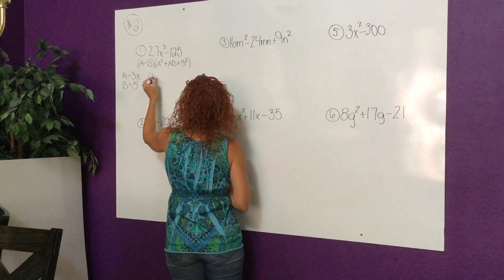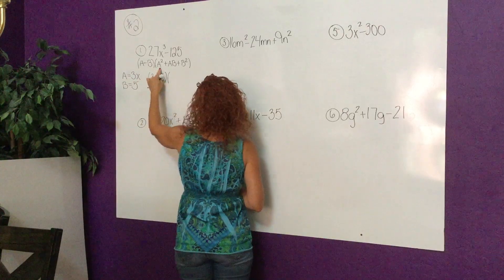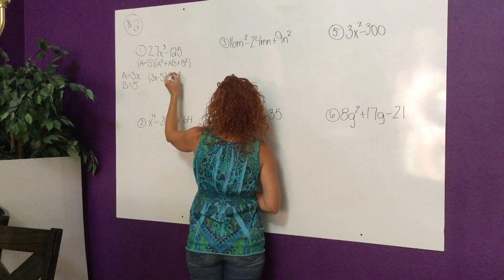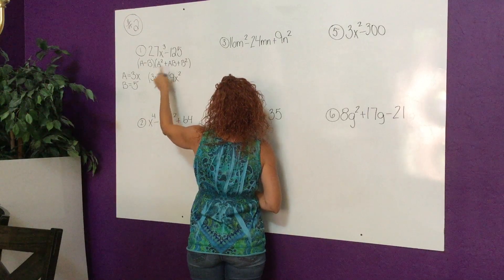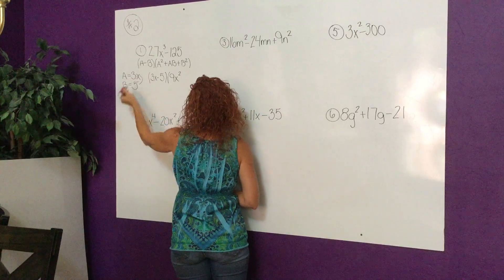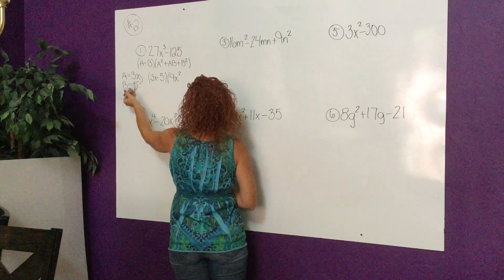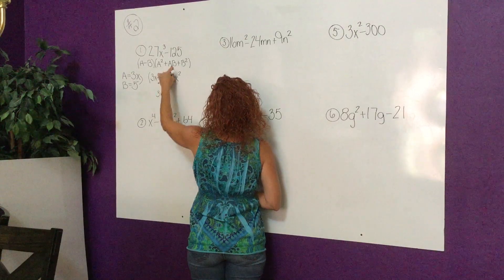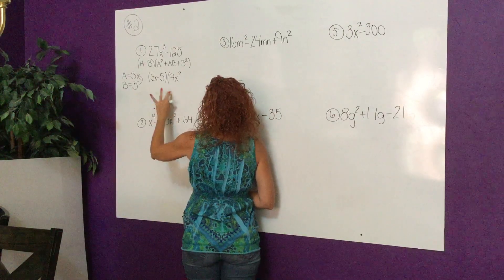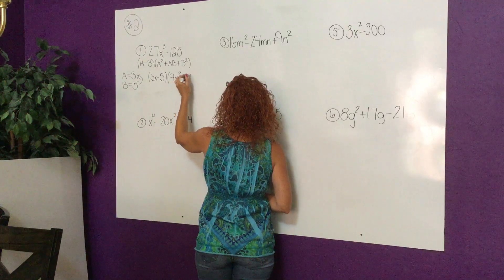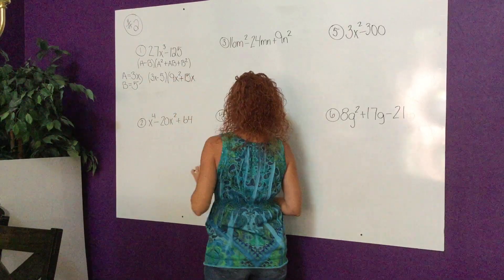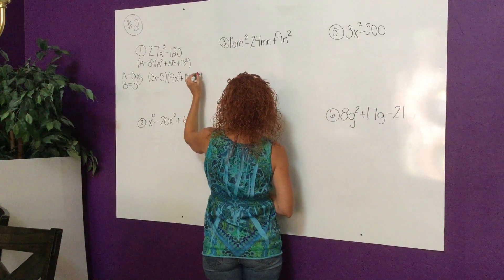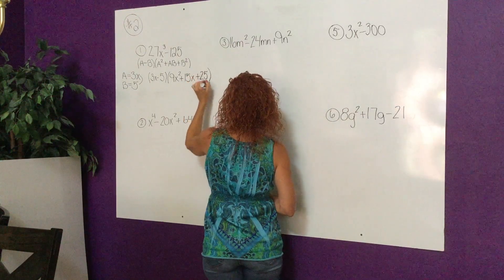Let's just plug it in. 3x minus 5. For this piece I do need to square that, so it's going to be 9x². Then I'm going to multiply these two. When I multiply here, 3 times 5 is 15x. And then when I square 5 I'm going to write 25.